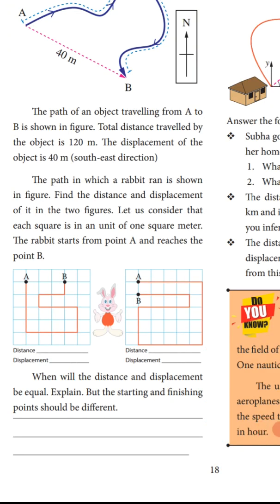You see this diagram — a diagrammatic representation where a rabbit starts from A and reaches point B. To find the distance and displacement, you count the squares. The distance is 17 meters and displacement is a straight line, so displacement is 3 meters. When will the distance and displacement be equal? If the rabbit is moving in a straight line path from the starting to finishing point, then the distance and the displacement will be equal.